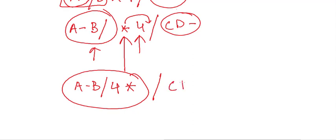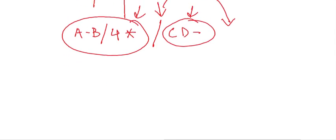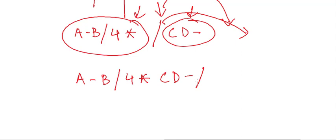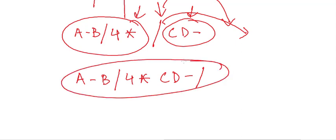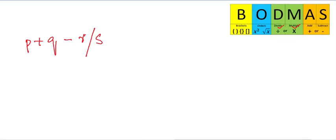Now between the current result and CD minus we have the slash operator, so it moves to the right. Our final answer is A minus B slash 4 star CD minus slash.